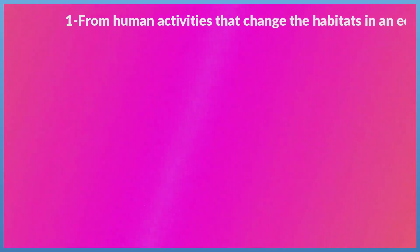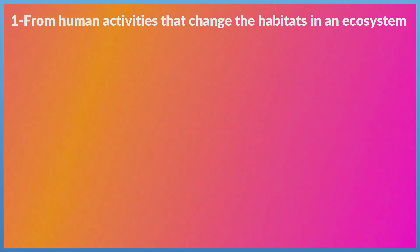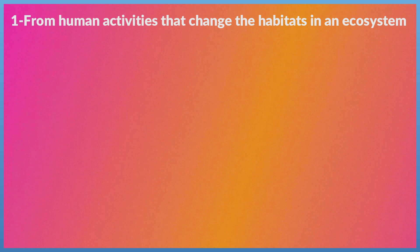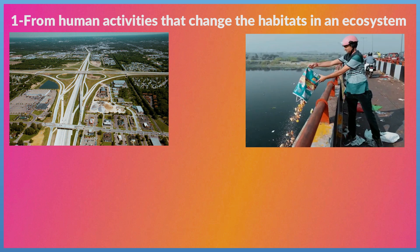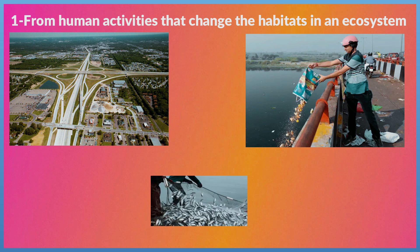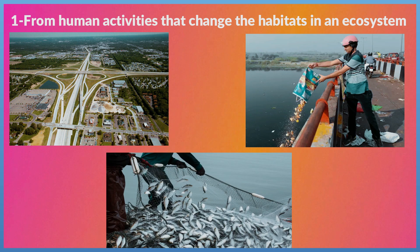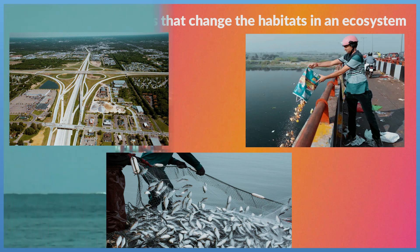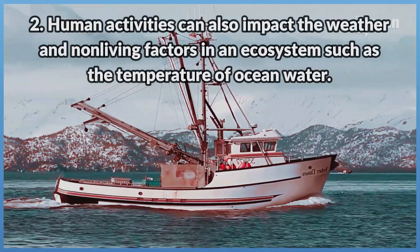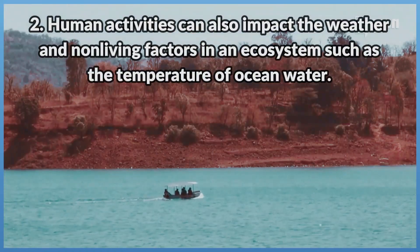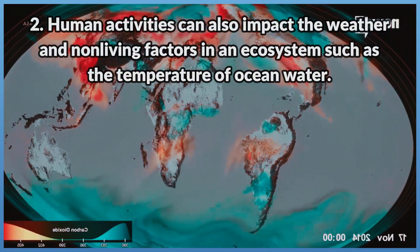Notes. Human activities that change the habitats in an ecosystem include: building more buildings and roads, throwing waste materials in water, and overfishing in seas and oceans. Human activities can also impact the weather and non-living factors in an ecosystem, such as the temperature of ocean water.